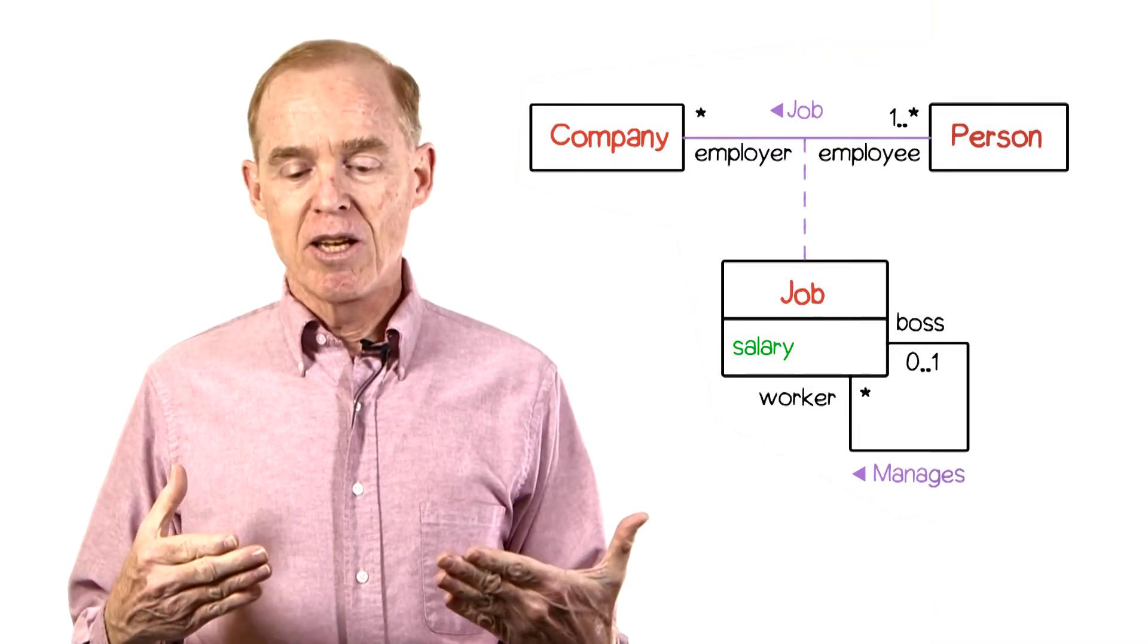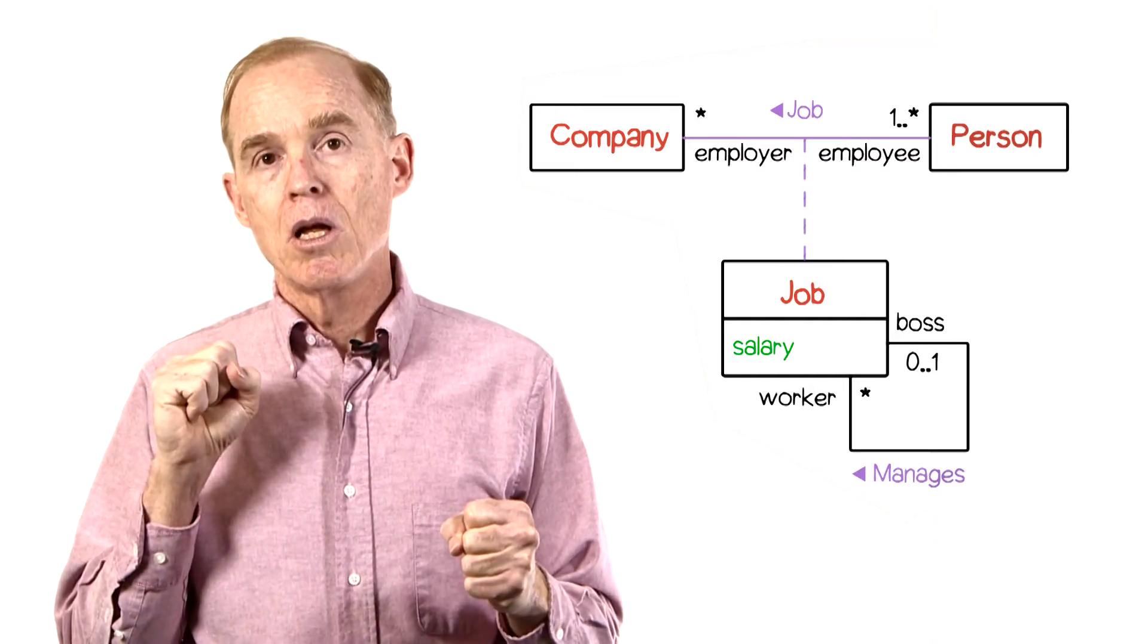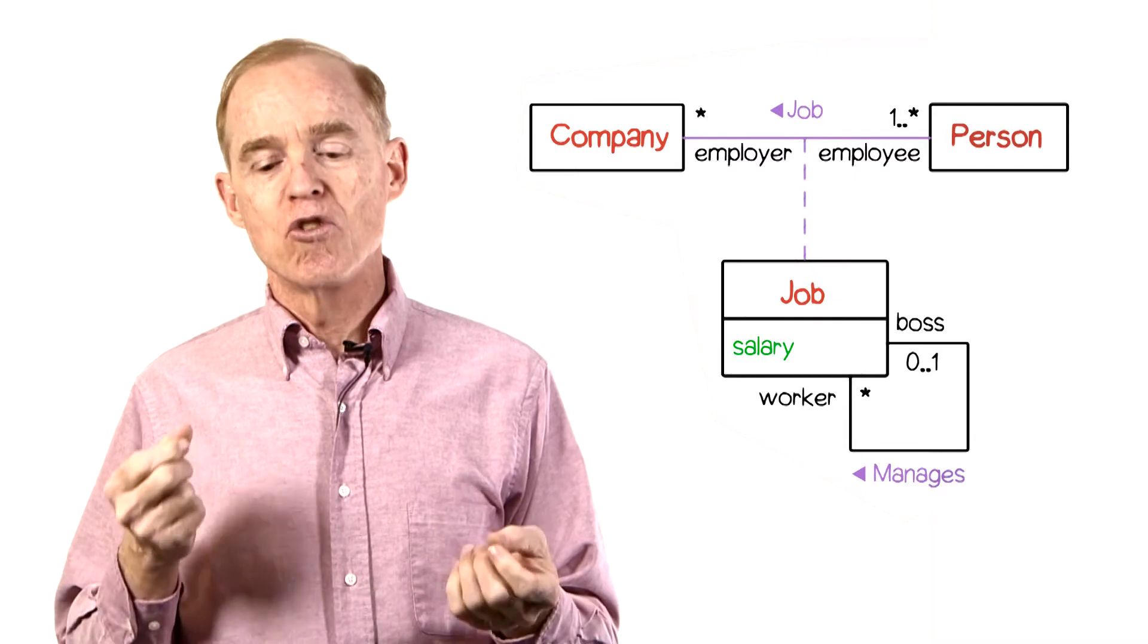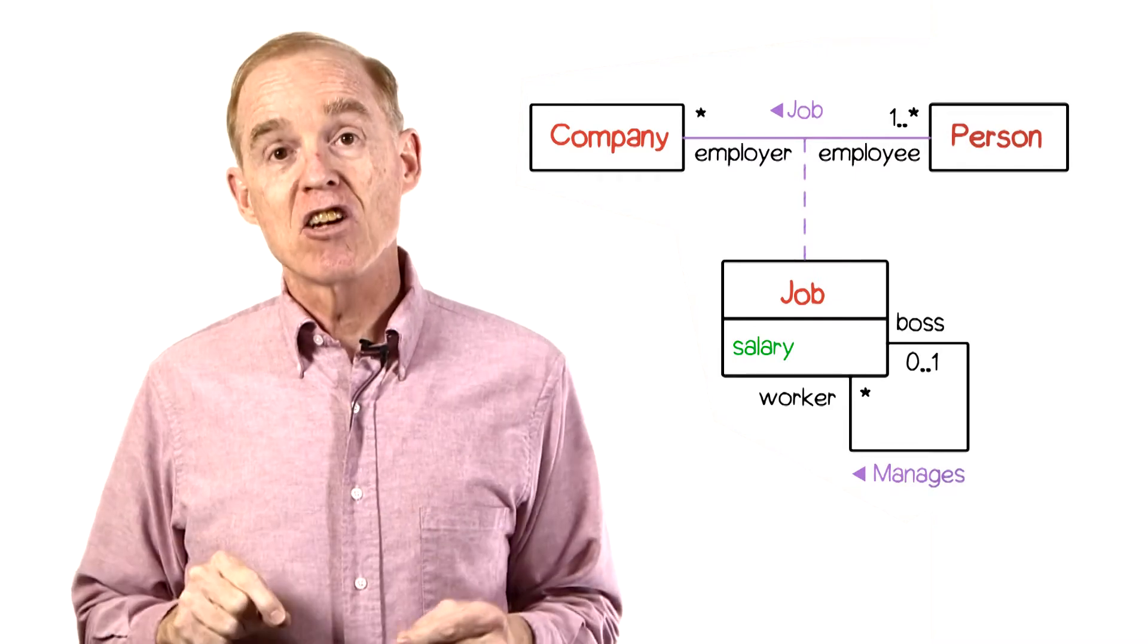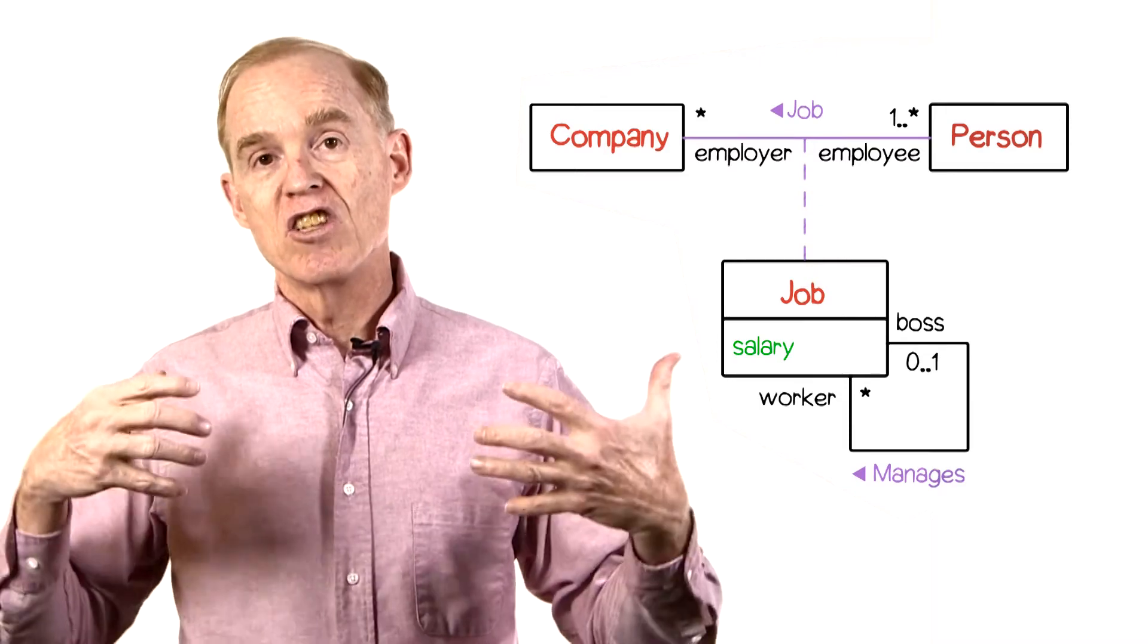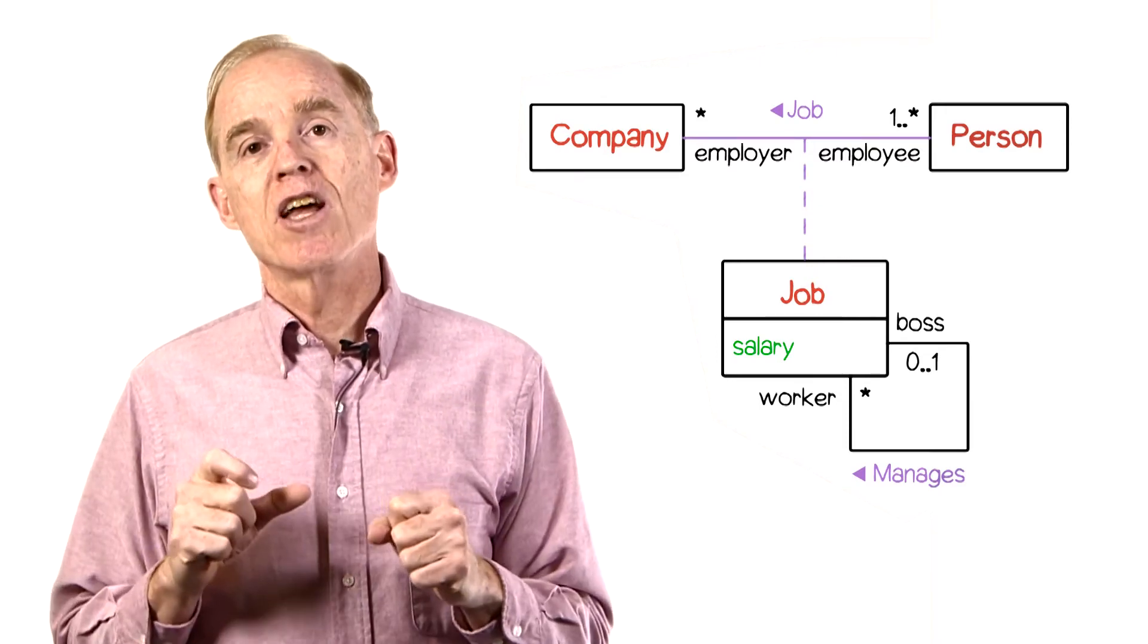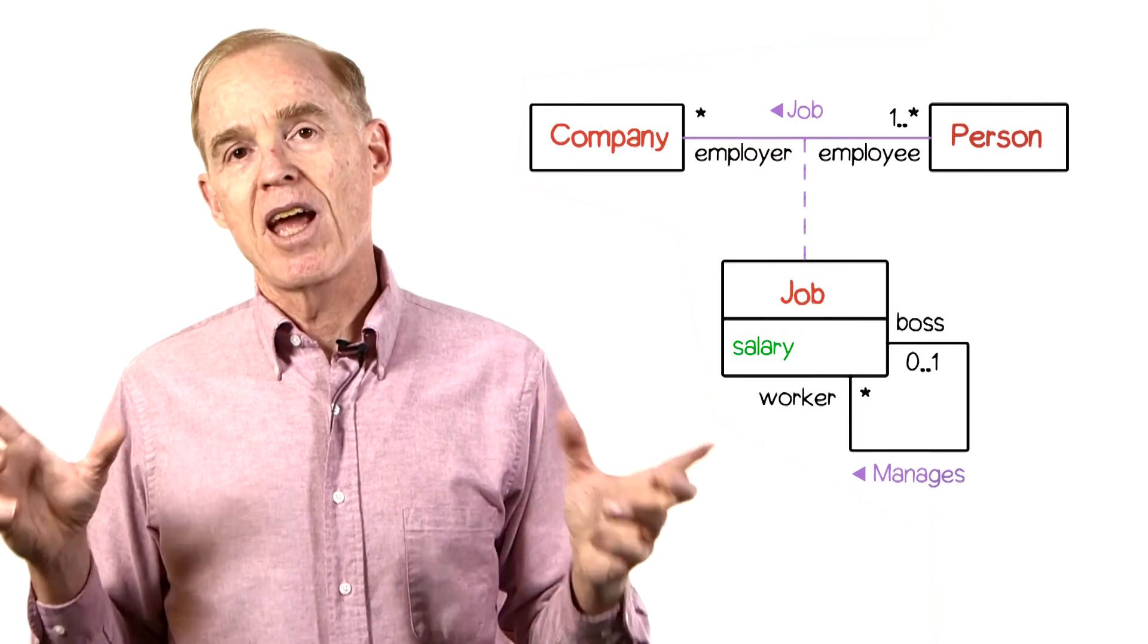Association classes are indicated by having a dashed line that abuts into the association line. At the end of the dashed line is another rectangle. In this case, it's the association class called job. And in the class rectangle for job, there is an attribute of salary.